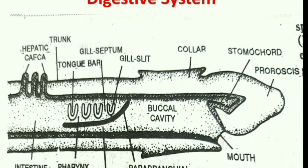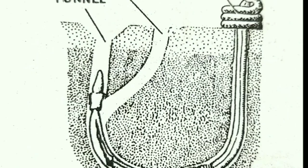The intestine opens to the outside through the anus, which is guarded by a sphincter muscle. So the alimentary canal runs: mouth → buccal cavity → pharynx (upper respiratory chamber, lower food chamber) → short esophagus → intestine (hepatic region and post-hepatic region) → anus.